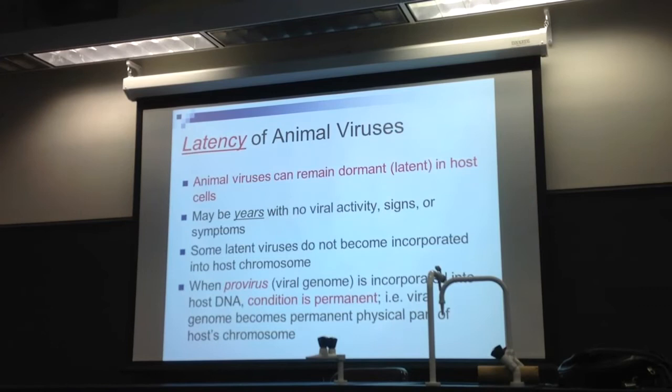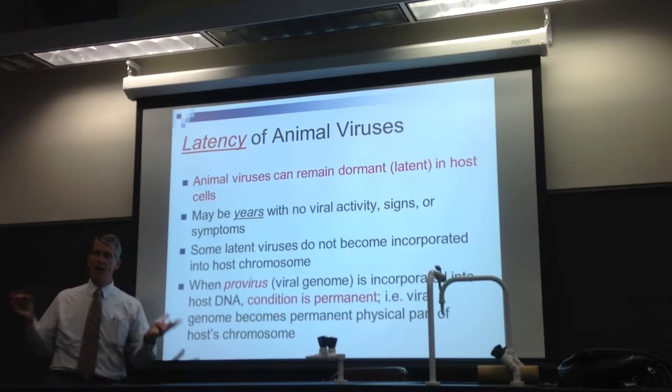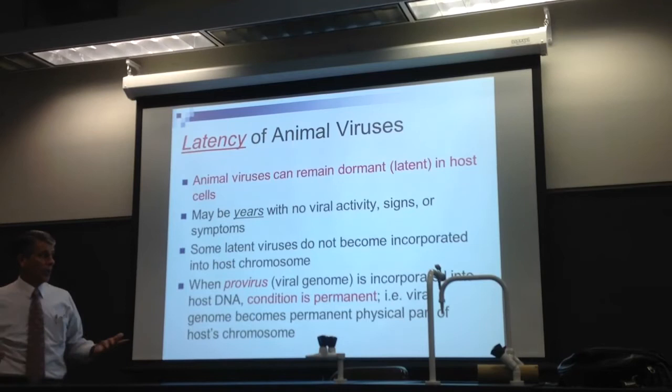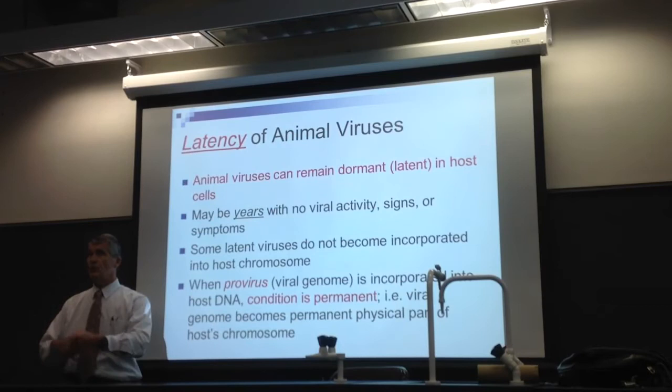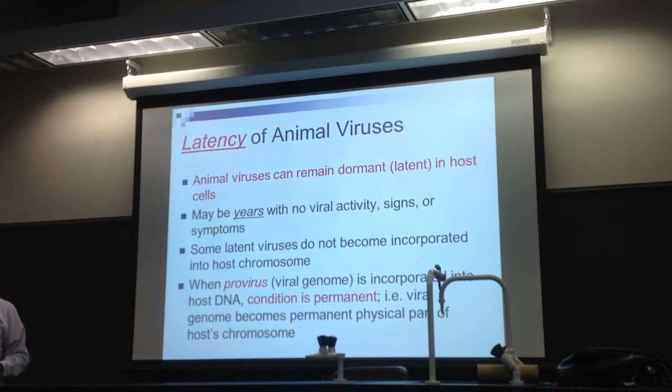Latency: animal viruses remain dormant or latent in the host cells, and that condition is permanent. When you have a lysogenic cycle, the DNA incorporates into the host cell — that's going to be permanent. It's not going to come out and the cell get healthy again; the cell is going to die or pass on that trait to the next daughter cell. This pro-virus is a permanent condition. When it is induced and goes to the lytic cycle, it kills the cell.